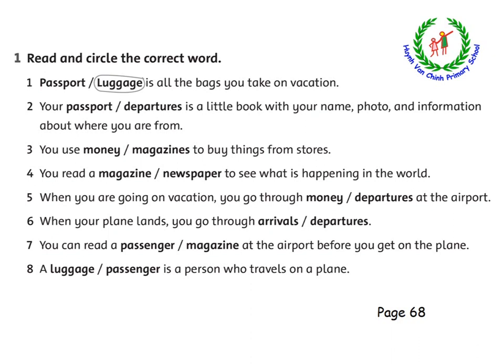Number six: when your plane lands, you go through arrivals or departures — khi máy bay của bạn hạ cánh, thì bạn phải đi qua khu nào đó. Number seven: you can read a passengers or magazine at the airport before you get on a plane — bạn có thể đọc một cái gì đó ở sân bay trước khi mà bạn bước lên máy bay. Number eight: our luggage or passengers is a person who travels on a plane — một cái gì đó là người di chuyển ở trên máy bay. Đó là phần hướng dẫn bài số 1 trang 68.